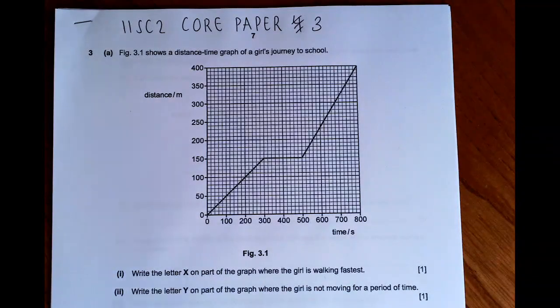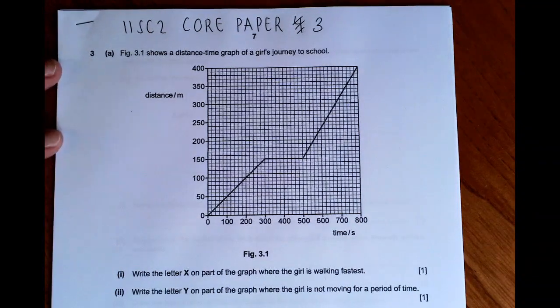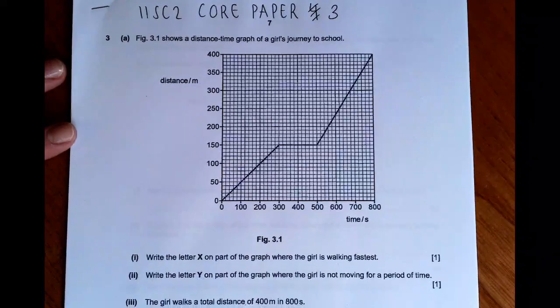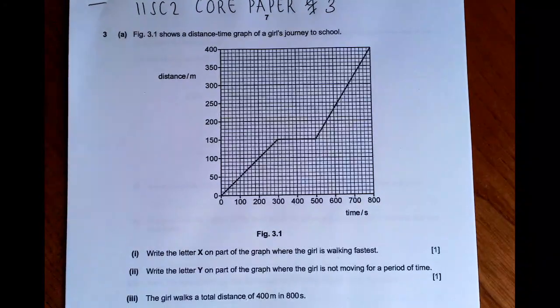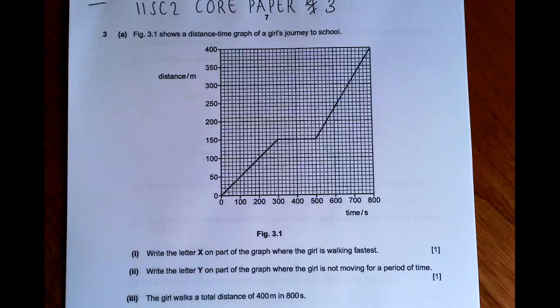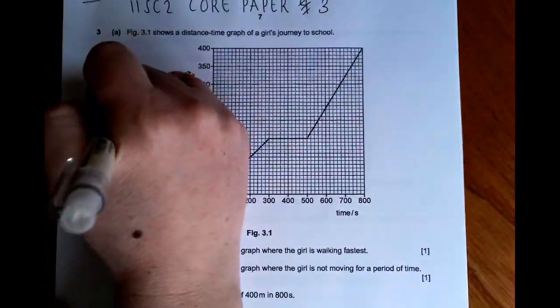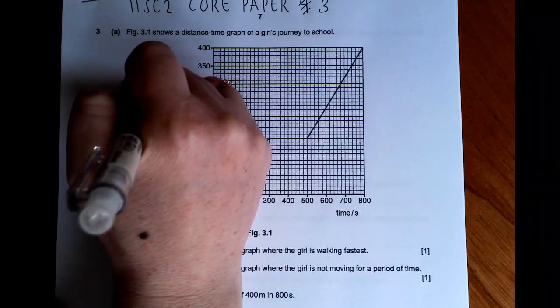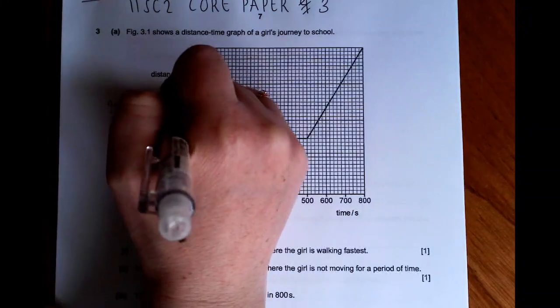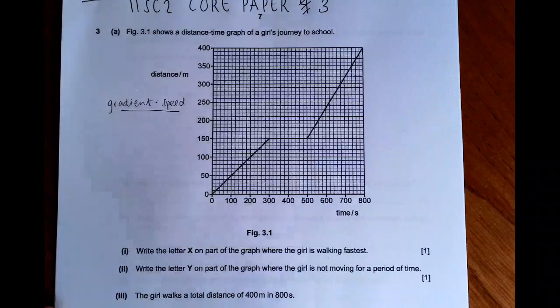Hi everyone, so this is your core paper 3. Look for your theory questions. Question 3 in the paper is the first physics question, so let's have a little look. We've got a distance-time graph. So the first thing we need to think about is what we know about a distance-time graph.